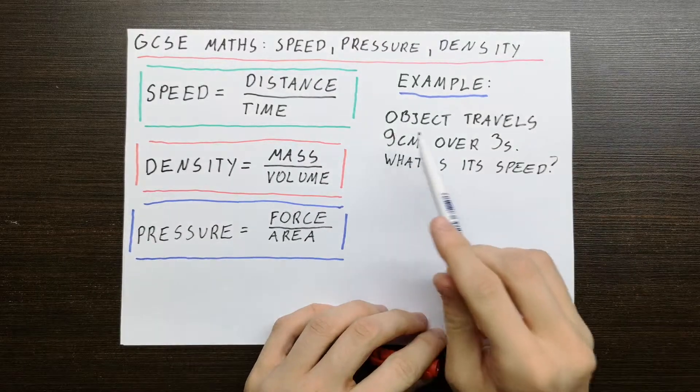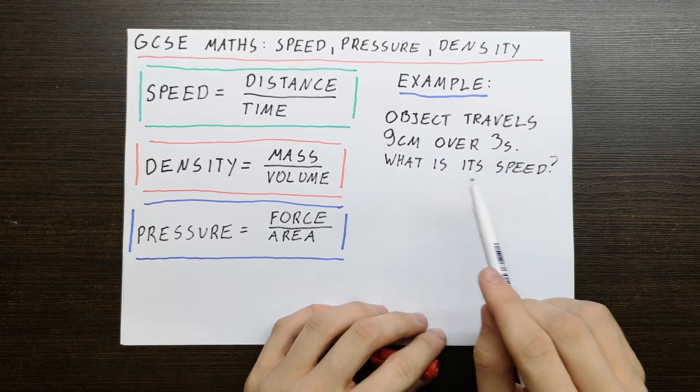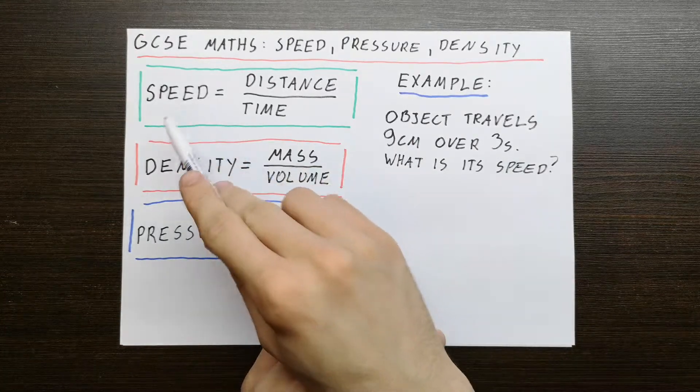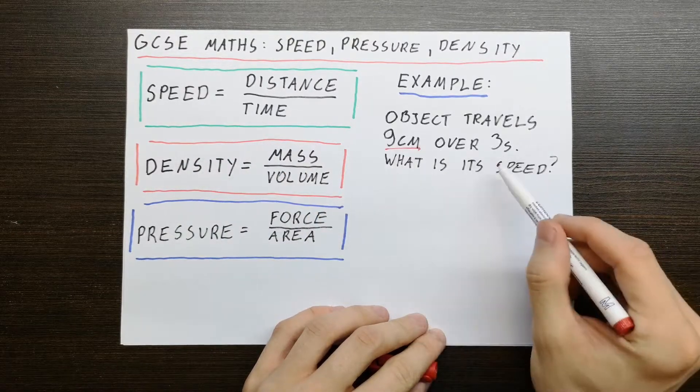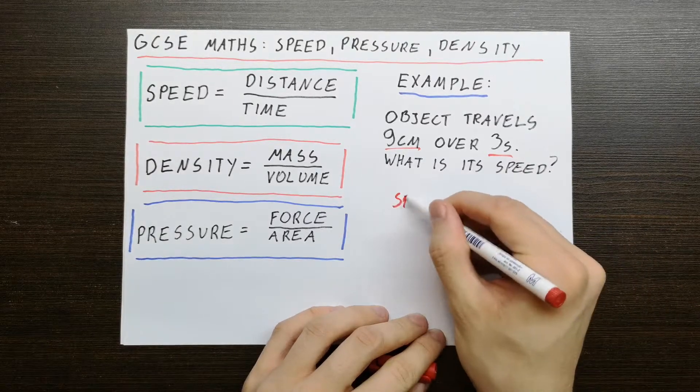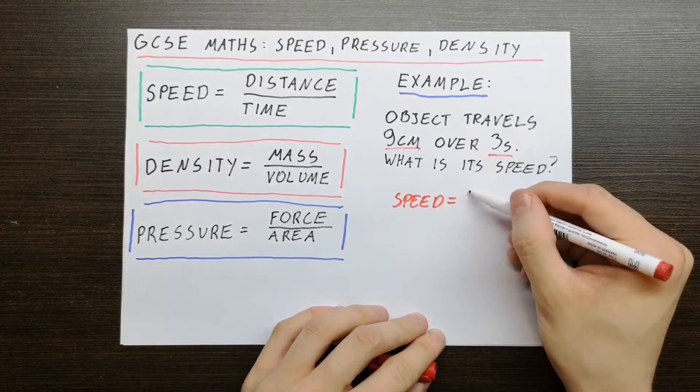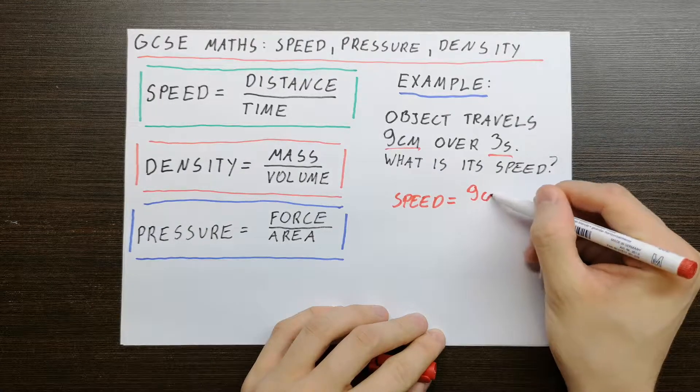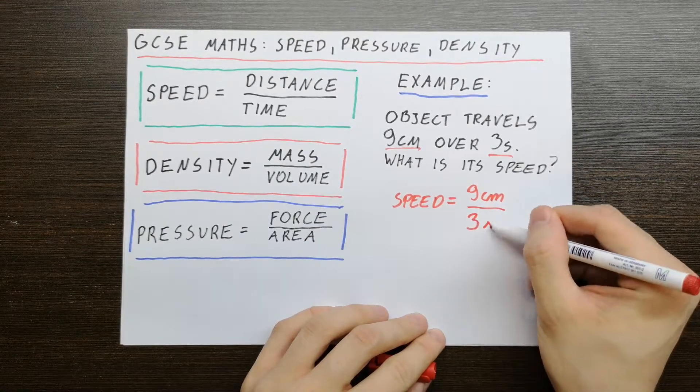For example, object travels 9 centimeters over 3 seconds. What is its speed? Here we have speed equals distance divided by time. This is distance, this is time. So speed equals 9 centimeters divided by 3 seconds.